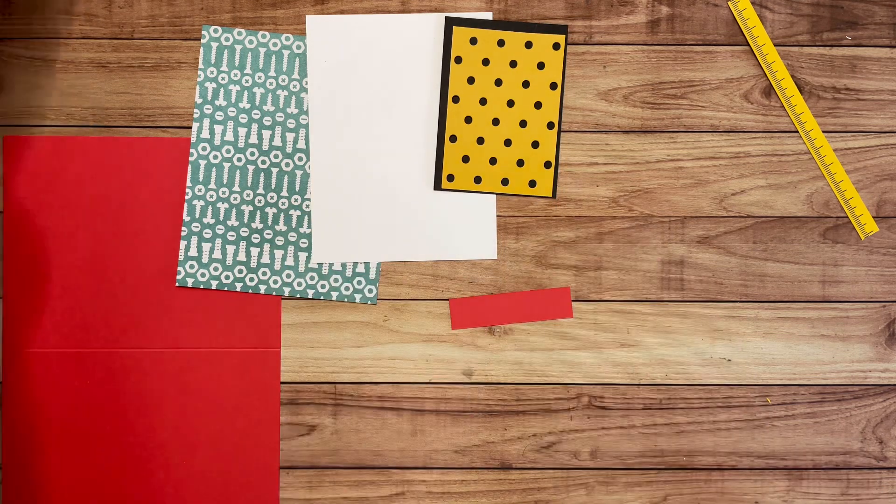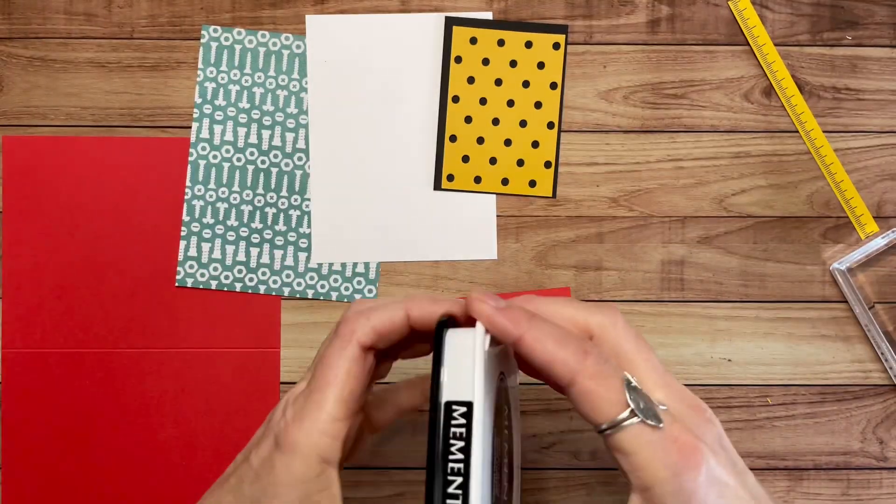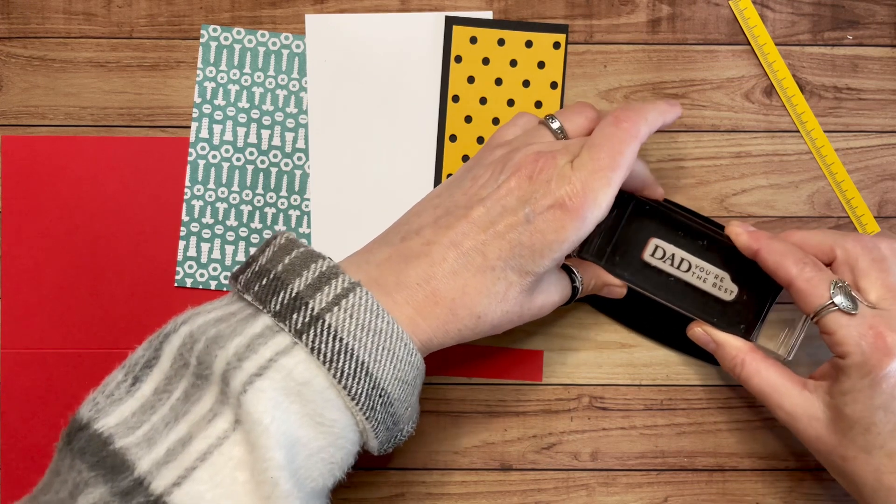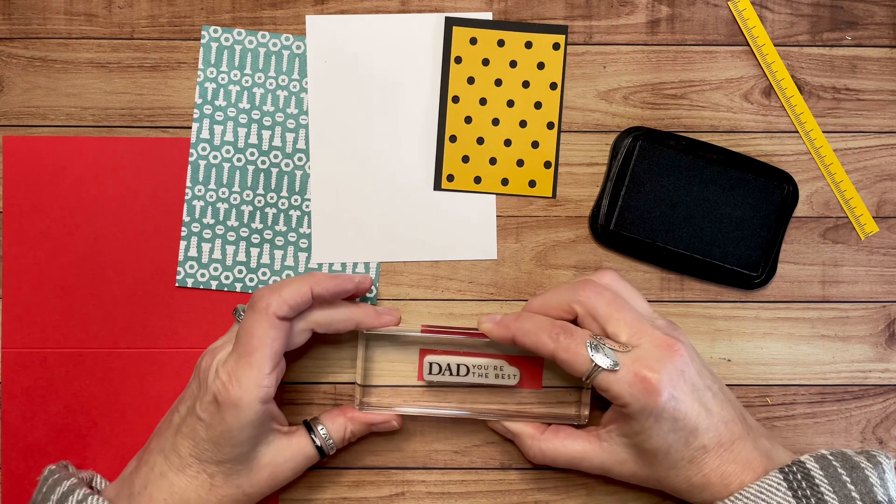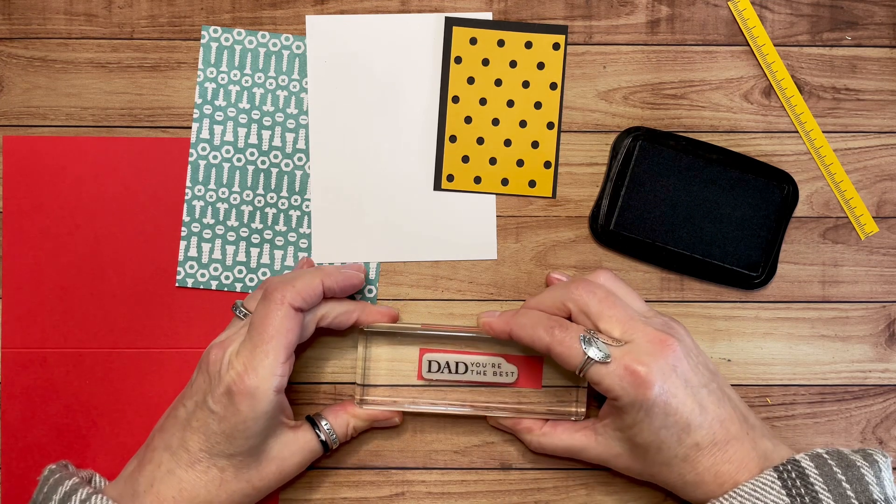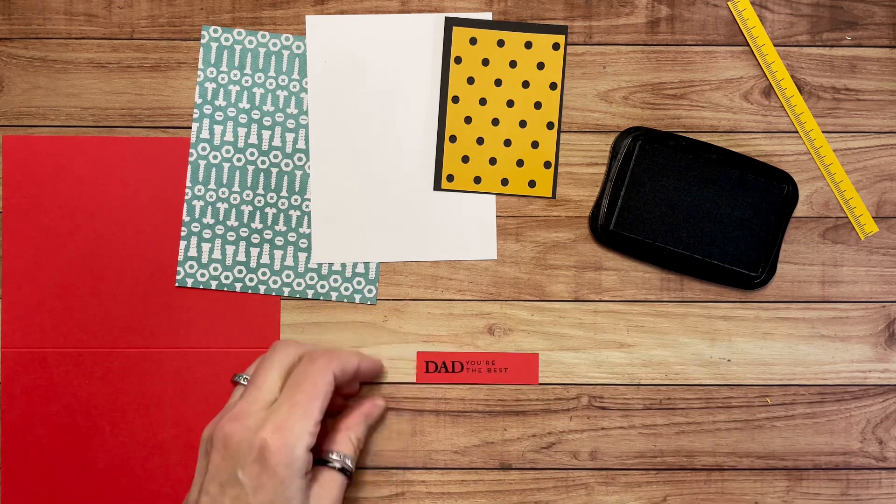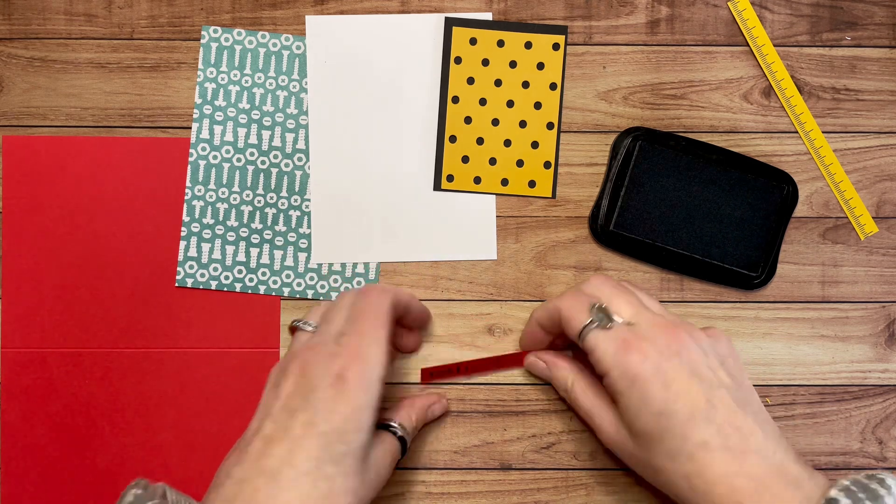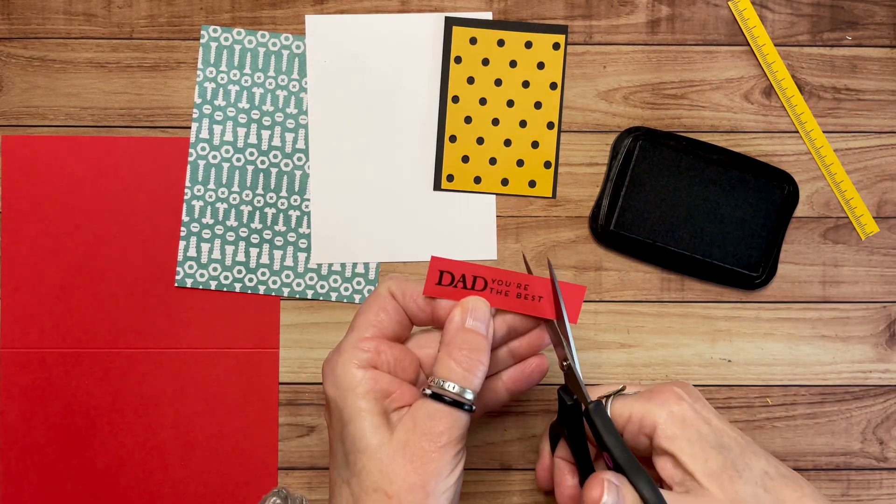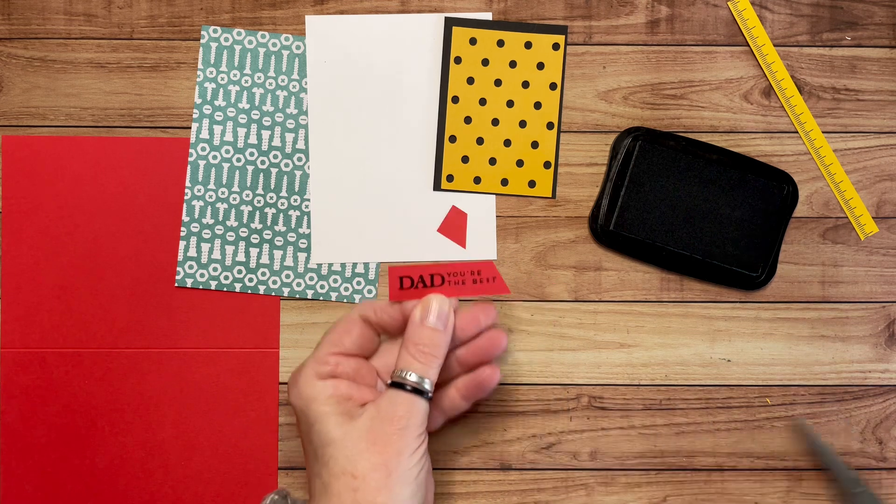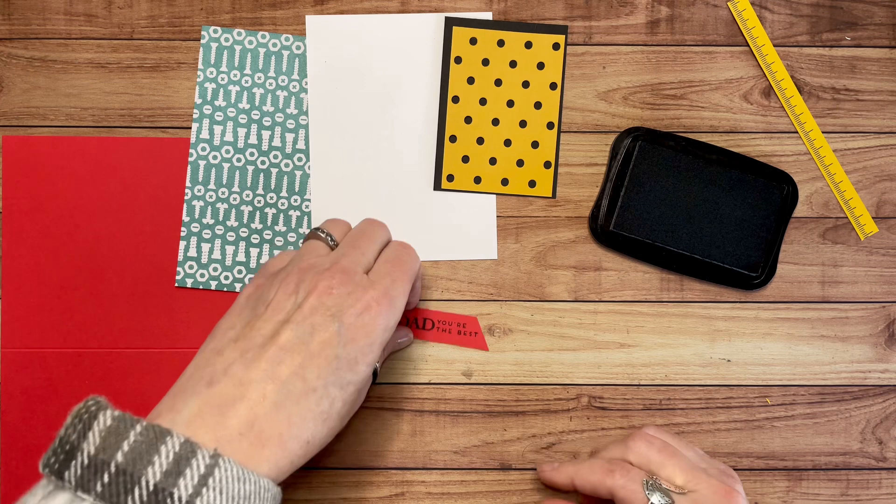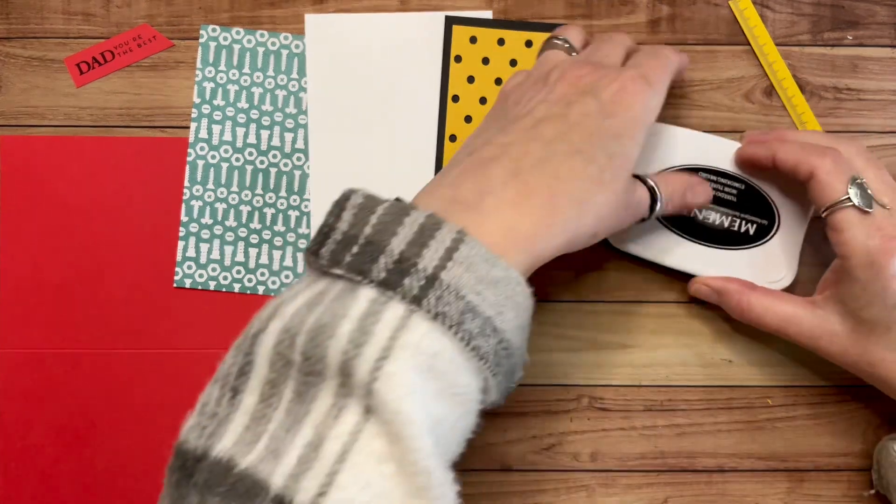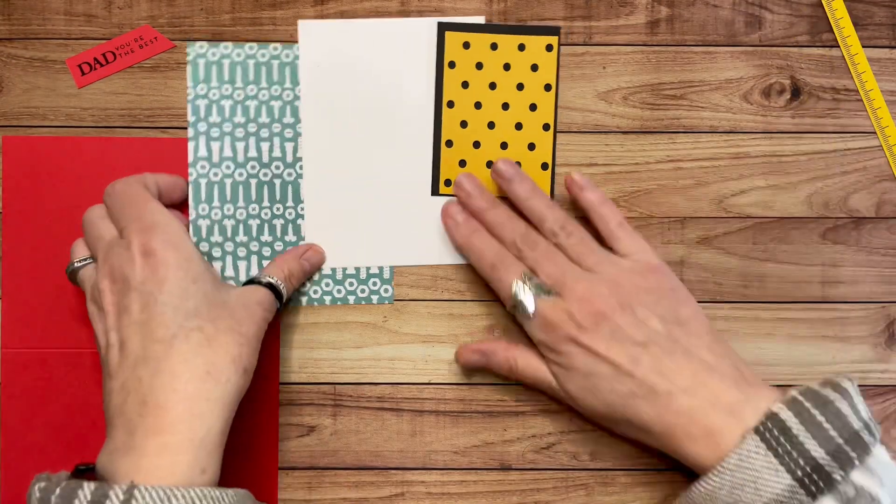All right. I also have a little strip of the Poppy Parade, and that's where I'm going to stamp this sentiment. I'm just going to use my Tuxedo Black ink, my Memento Black, and I'm just going to stamp that on here. Let's see, how did I do today? Not too bad. I think that will work just fine, and while we're doing this, I'm going to go ahead and cut the end off of it just to give it a little more interest. Instead of just a plain rectangle, why not have one that's got a little banner on the end? I'm going to set that aside right over here.